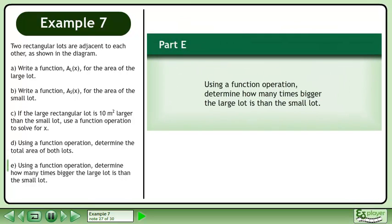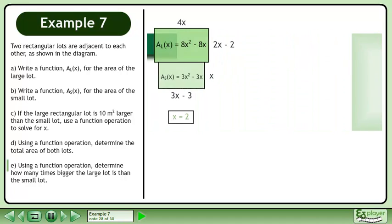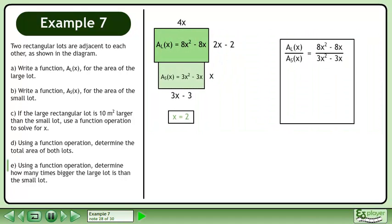Now we'll move on to Part E. Using a function operation, determine how many times bigger the large lot is than the small lot. We can divide the area of the large rectangle by the area of the small rectangle to find out how many times bigger the large rectangle is.